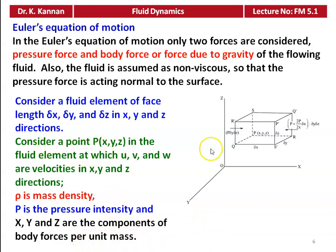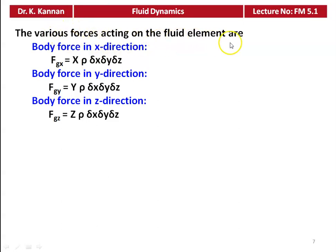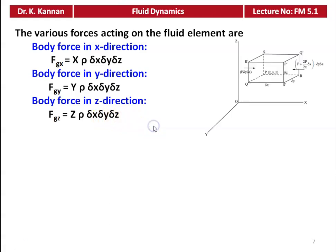ρ is the density of the fluid element, P is the intensity of pressure, and X, Y, Z are the components of body forces per unit mass. We calculate the various forces on the fluid element. Body force in the x direction: Fgx = X · ρ · δx · δy · δz. Similarly, Fgy = Y · ρ · δx · δy · δz, and Fgz = Z · ρ · δx · δy · δz, where δx·δy·δz is the volume of the fluid element.